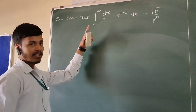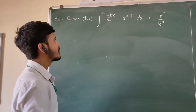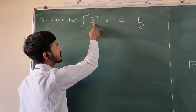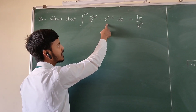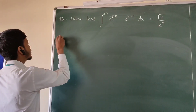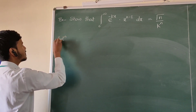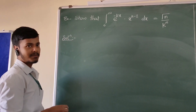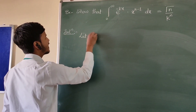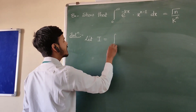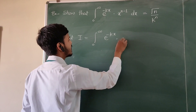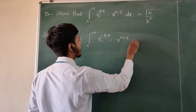Let us see this example. We have to show that the integral from 0 to infinity of e to the power minus kx into x to the power n minus 1 dx is equal to gamma n upon k to the power n. As you can see from the definition, what we are going to do is make a substitution. So first of all, consider this integral to be i, let i equal the integral from 0 to infinity of e to the power minus kx into x to the power n minus 1 dx.